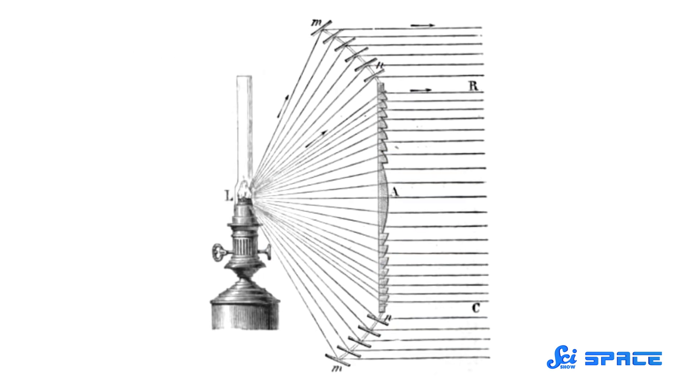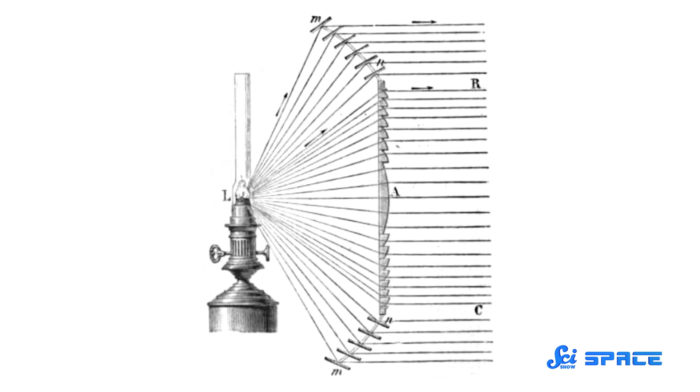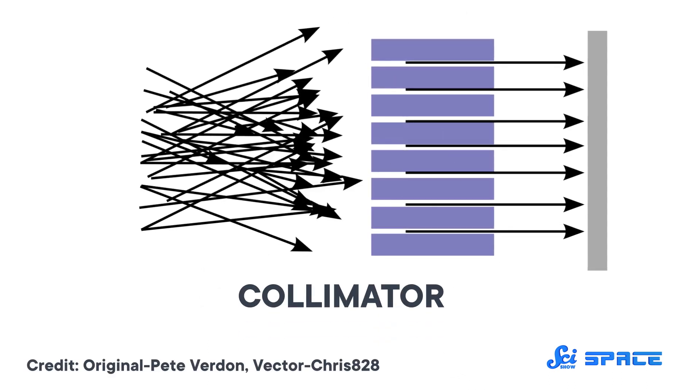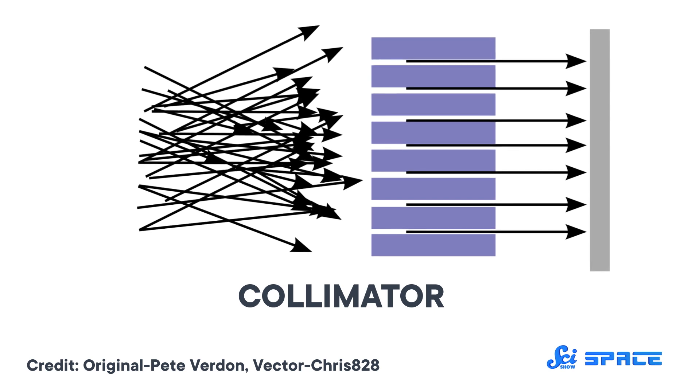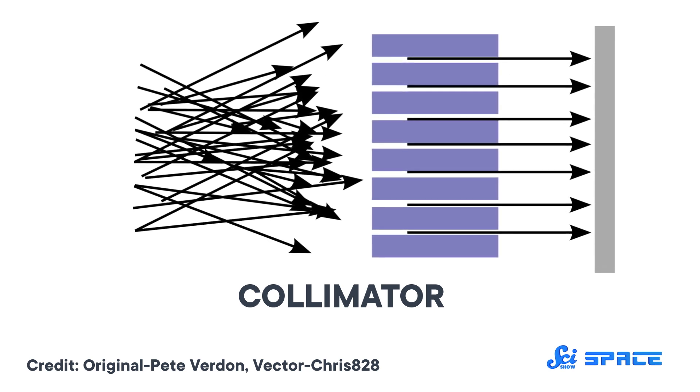The light passes through and is bent pretty much exactly as it would be with a thick curved lens, but with just a fraction of the materials and weight. So these Fresnel lenses were used in lighthouses to collimate the light, to take the diverging light rays from a lamp and straighten them out into one concentrated beam.